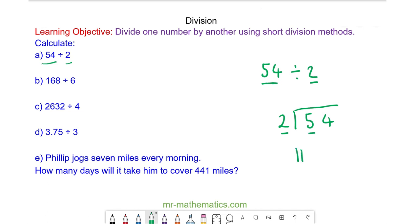Now we need to look at how many 2s go into 5. Well here we have the number 5. You can see there are two 2s with one left over. We carry the 1 to the next column.